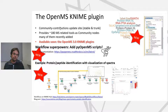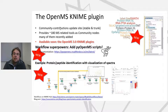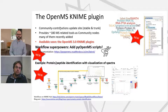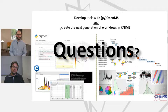We have also extended the workflows on KNIME Hub. Feel free to check out KNIME Hub for our latest workflows — we added one showing how peptide and protein identification can be done in KNIME, including some nice visualization of spectra. Julianus also published a blog post on that, something you should definitely check out. If you want to develop mass spec tools with OpenMS or pyOpenMS, feel free to contact us.